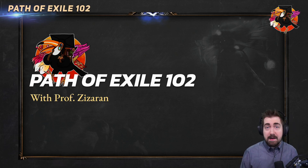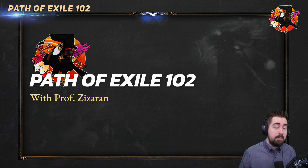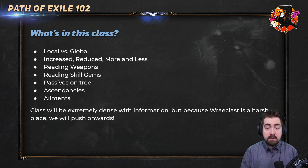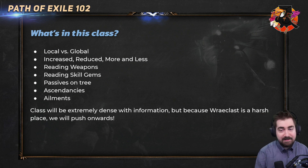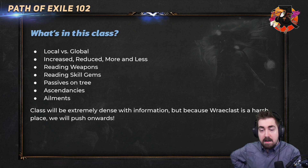Scizorin here with another episode of Path of Exile University, coming up right before 3.15 Expedition League. This is not the most basic PoE University episode — we do have a PoE 101 for complete beginners. This is going to be slightly more advanced, covering things like local versus global, increased, reduced, more or less, how to read weapons, skill gems, passives on skill tree, ascendancies, and ailments. It'll be very dense with information. There's a very big difference between increased and more in Path of Exile.